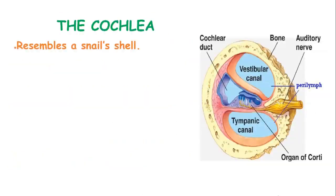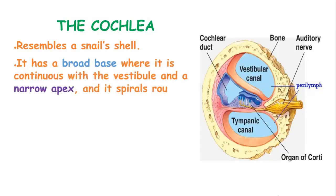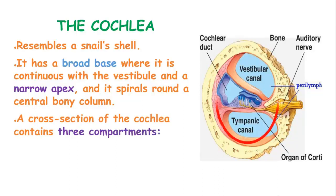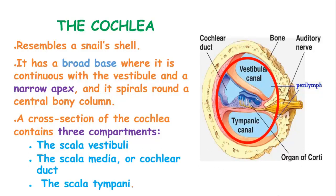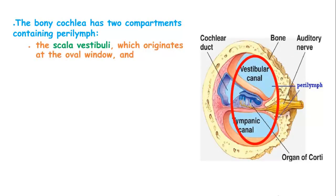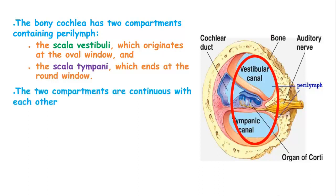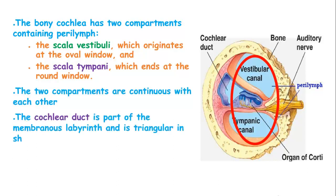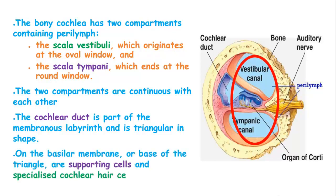The cochlea resembles a snail's shell; it has a broad base where it is continuous with the vestibule, a narrow apex, and it spirals around a central bony column. A cross section of the cochlea contains three compartments: the scala vestibuli, the scala media or cochlear duct, and the scala tympani. The bony cochlea has two compartments containing perilymph — the vestibular canal or scala vestibuli, which originates at the oval window, and the scala tympani or tympanic canal, which ends at the round window. The two compartments are continuous with each other. The cochlear duct is part of the membranous labyrinth and is triangular in shape. On the basilar membrane, which forms the base of the triangle, there are supporting cells and specialist cochlear hair cells which contain auditory receptors.